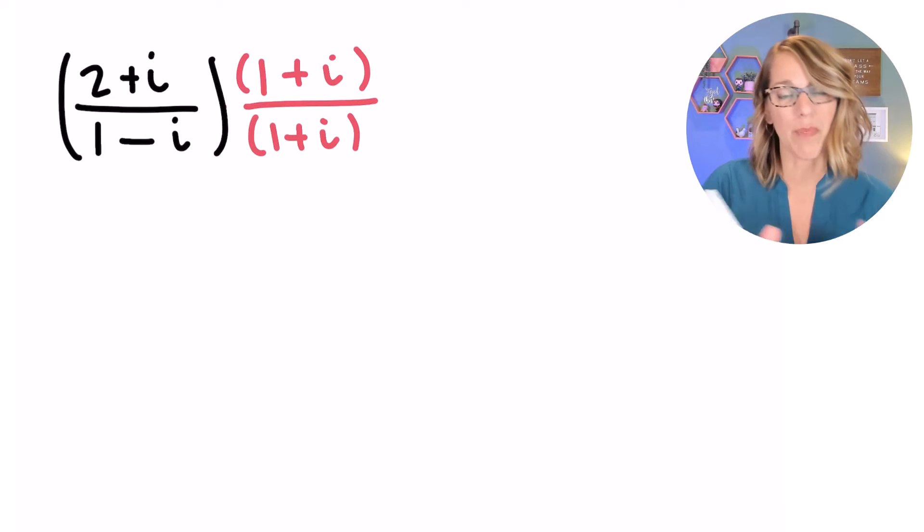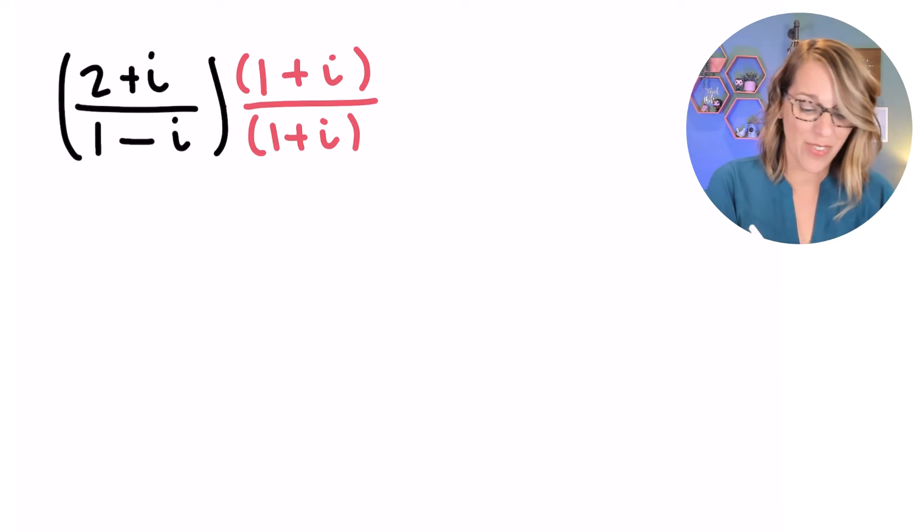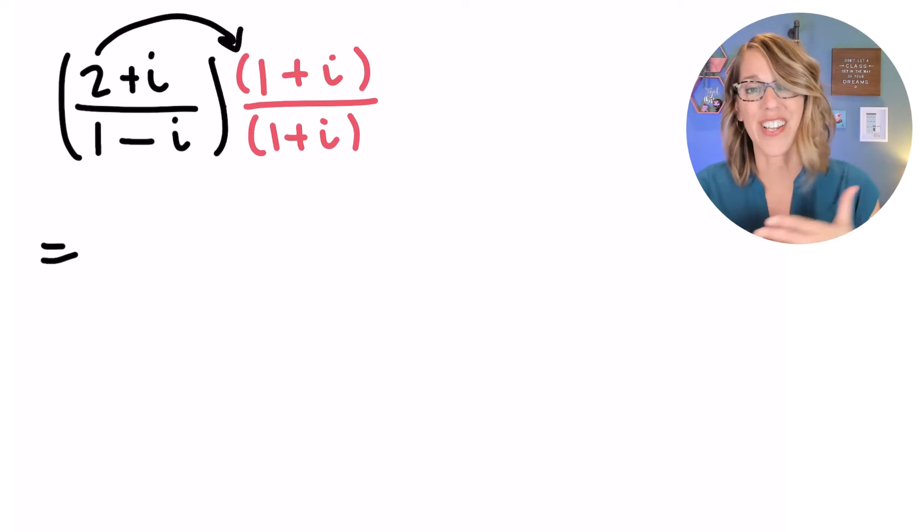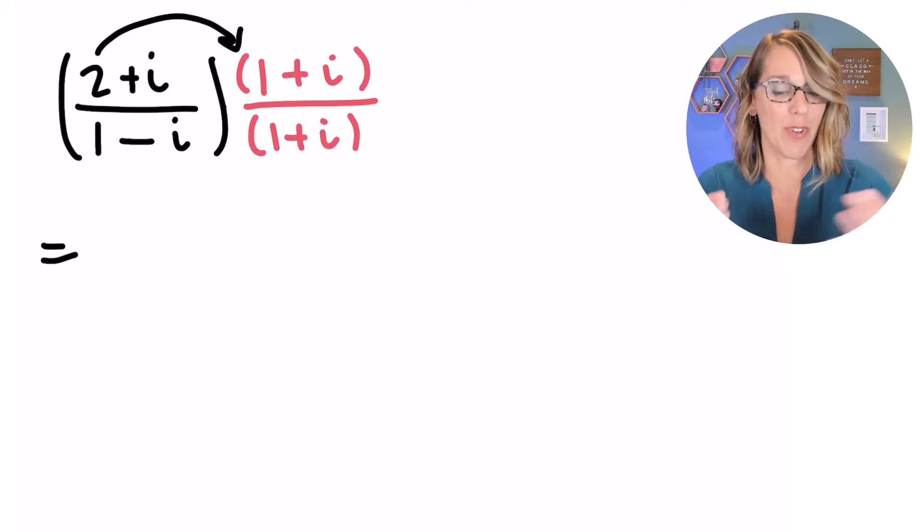I'm going to start by multiplying that numerator through. As I multiply that numerator through, I'm using FOIL: first, outer, inner, last, or just distribution.